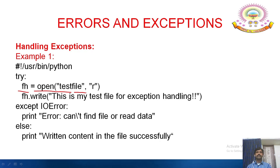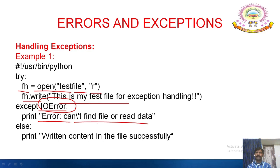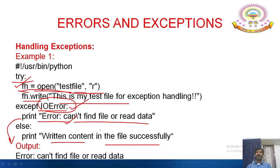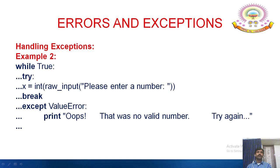Example: fh = open('testfile', 'r'), then fh.write('This is my test file for exception handling'). In the except block, we catch IOError and display the message 'Cannot find file or read data'. In the else block: 'Written content in the file successfully'. If the try statement cannot be executed successfully because of an IOError, the except block executes. Output: error — cannot find file or read data — because testfile is not yet created.